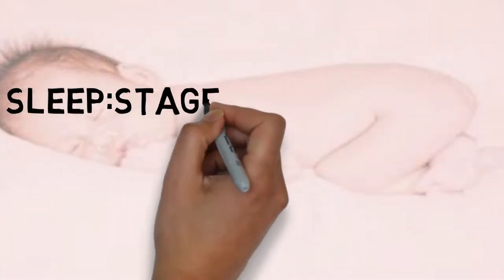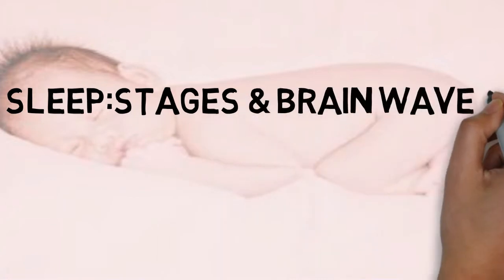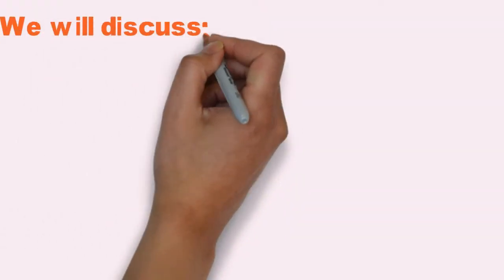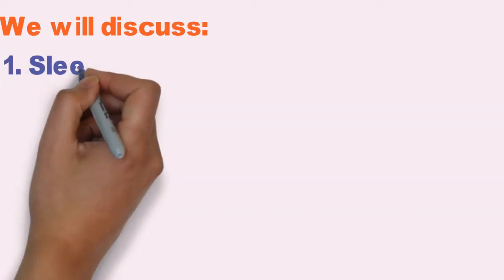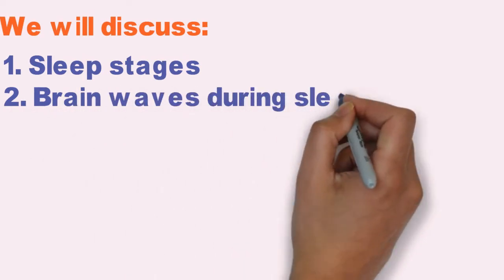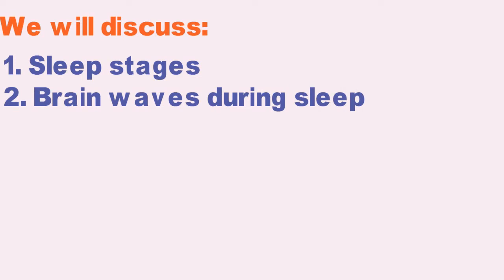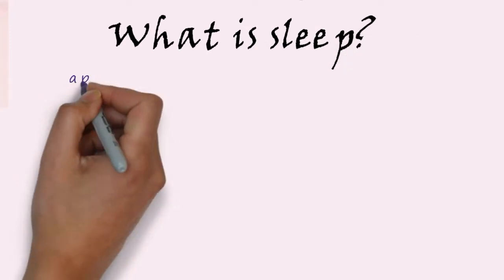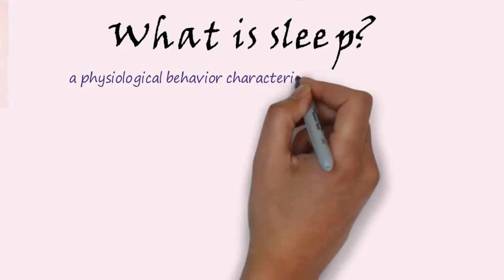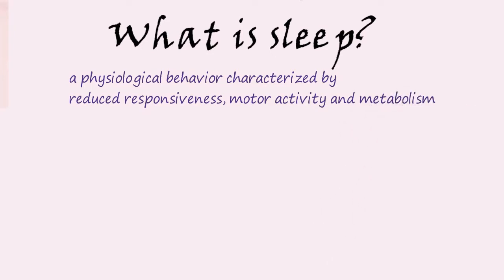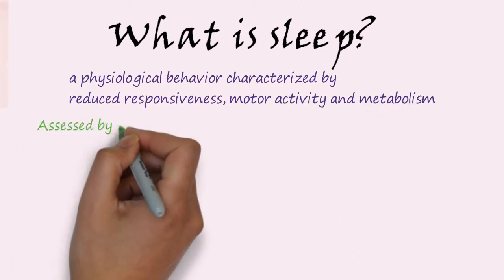In this video we will discuss sleep stages and brain waves related to the various stages of sleep. In the next video we will discuss sleep-related behaviors and parasomnias. Sleep is a physiological behavior characterized by reduced responsiveness, motor activity, and metabolism. Sleep can be assessed by using a polysomnograph.